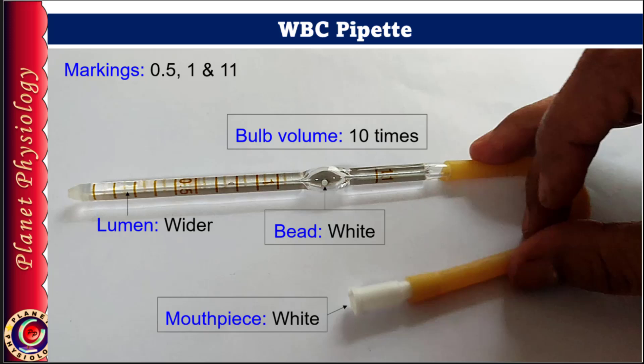These pipettes are used to obtain the desired level of dilution. So let's see how we know the dilution achieved. It's very simple: if you take blood up to the 1 mark and diluting fluid up to the 11 mark, the dilution you get is 10 times. You may wonder why 10 times and not 11, since the marking after the bulb is 11. Always remember, we obtain blood sample first and then the diluting fluid — so the dilution is happening only in the bulb. For the WBC pipette, the bulb volume is 10 times the stem, so one part of blood is diluted 10 times.